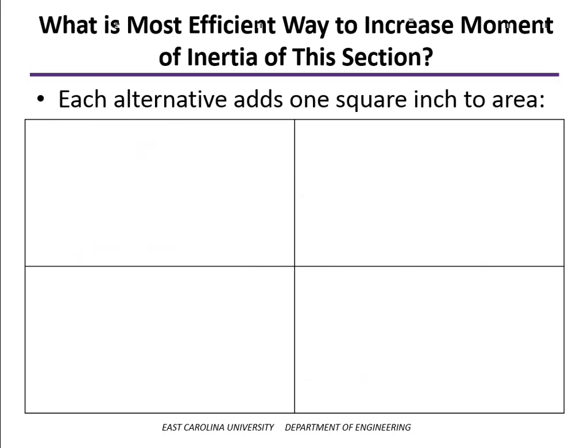With that in mind, how would we stiffen this beam if we needed to increase the moment of inertia? What's the most efficient way to do that?